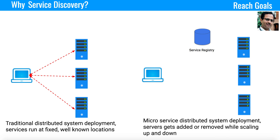The service registry is a database that holds all the available registered instances and provides two primary APIs. The first is a management API where servers can register their instances. The second is a query API that the client can use to figure out which IP address or instance is available for it to use.